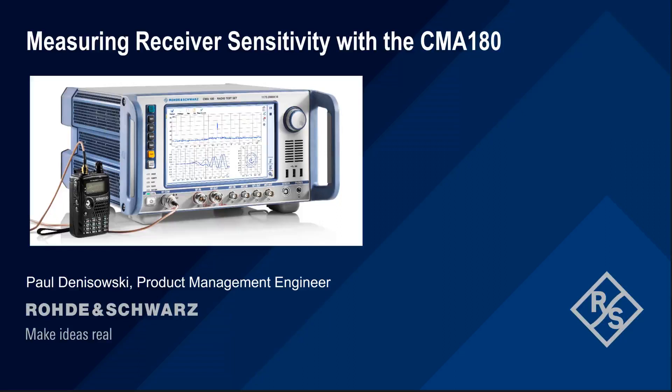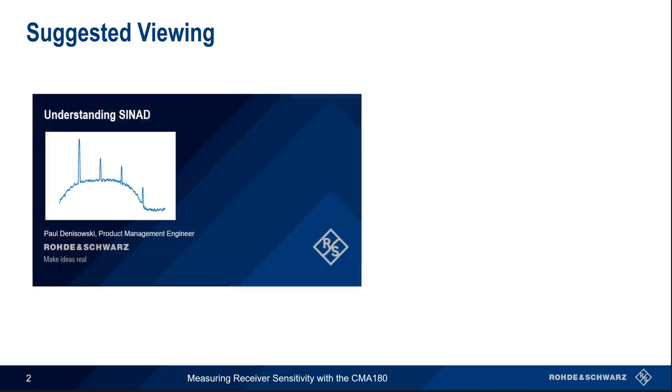Hello, and welcome to this presentation: Measuring Receiver Sensitivity with the CMA-180. This presentation explains how to measure analog receiver sensitivity using the Rohde & Schwarz CMA-180 radio test set. If you're not already familiar with SINAD and how sensitivity is quantified using SINAD, you might want to watch the presentation 'Understanding SINAD' before proceeding.